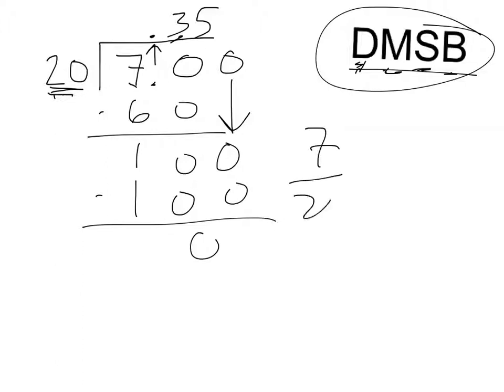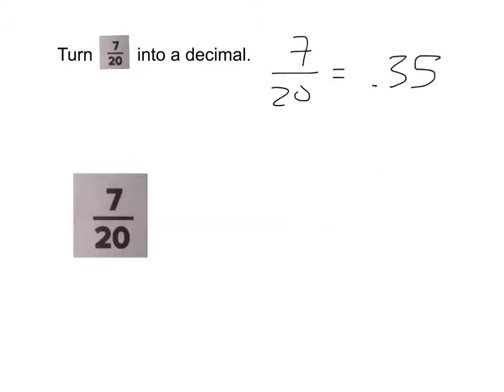So 7/20 equals 0.35 as a decimal. Since we found out that 7/20 equals 0.35, I just got to throw a couple extra variations on some different types of problems you will see. If I were to say that was negative 7/20, I still have negative 7 divided by 20.